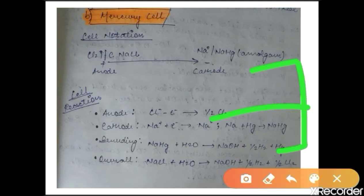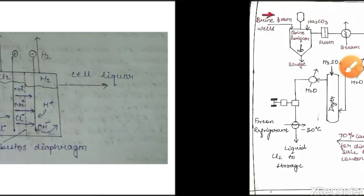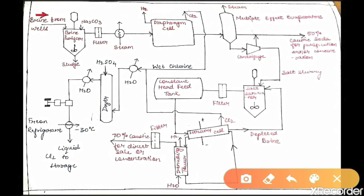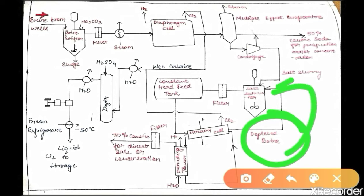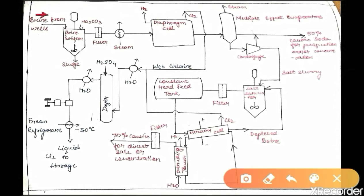The depleted brine from the mercury cell is recycled — sent back to the salt saturator to be re-saturated and concentrated. The mercury recovered from the denuding tank is sent back to the mercury cell to avoid waste. Chlorine gas produced is sent for purification, and hydrogen gas is also ejected. Water is supplied to the denuding tank as a reactant.